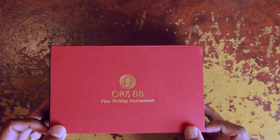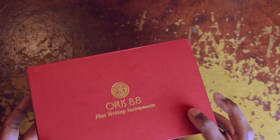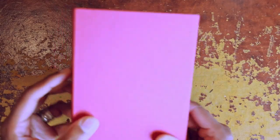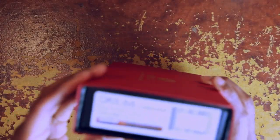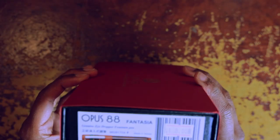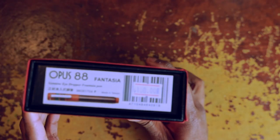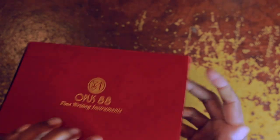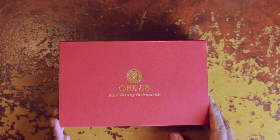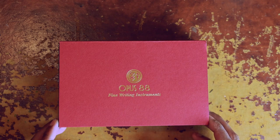So let's just start with the box itself. Opus 88 fine writing instruments. Nothing fancy about the box, it's a cardboard box. Opus 88 Fantasia, and I bought this, it retails for about 180 bucks, at least it did at the Vancouver Pen Shop, and I got a sale on it for 20% off, which is a sale that they're having right now.